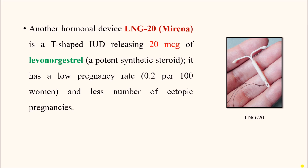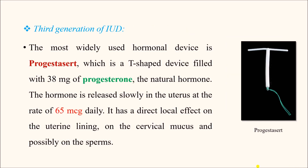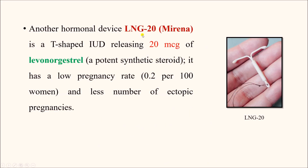The LNG20 has a low pregnancy rate of 0.2 per 100 women and a reduced number of ectopic pregnancies. To summarize the third generation IUDs: Progesterone releases the natural hormone at 65 micrograms daily, whereas LNG20 releases 20 micrograms of levonorgestrel daily, which is a synthetic progesterone.